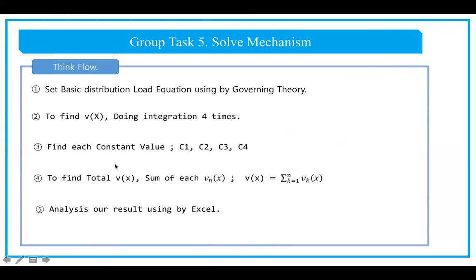In the third step, we find each constant value C1, C2, C3, C4 that come from the integrations. In the fourth step, we find the total v(x), which is the sum of all the deflections. Finally, in the fifth step, we do an analysis using Excel charts.